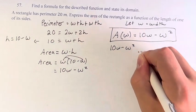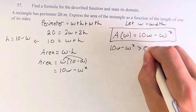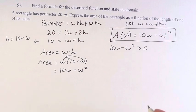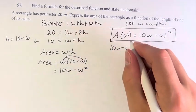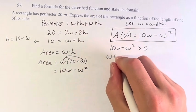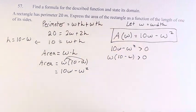10w minus w squared has to be greater than zero. So how do we do this? We can factor out a w. w times 10 minus w is greater than zero.